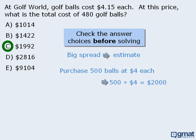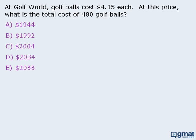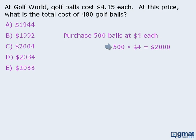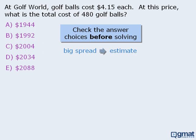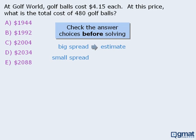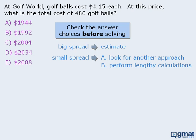Now, what would we do if the answer choices weren't so spread apart? For example, what would we do if the answer choices were close together like this? Well, if we estimate here, we get an approximate answer of $2,000, but all of the answer choices are very close to $2,000, in which case it's impossible to tell which is the correct answer. So we know that if the answer choices are spread apart, we can save time by estimating. But if the answer choices are very close together, plan A is to look for another approach, and failing that, plan B is to perform lengthy calculations.